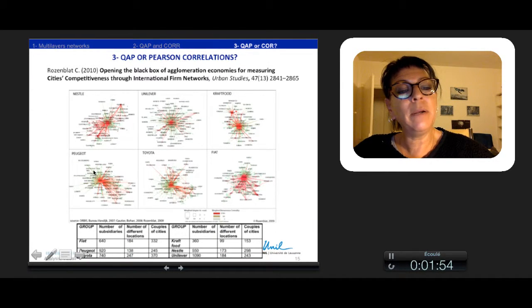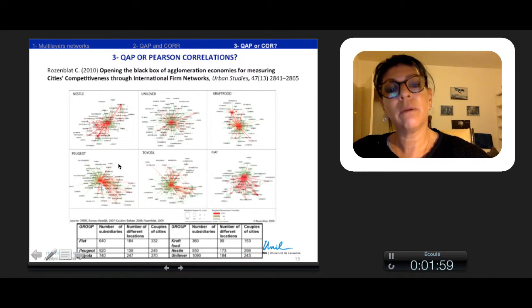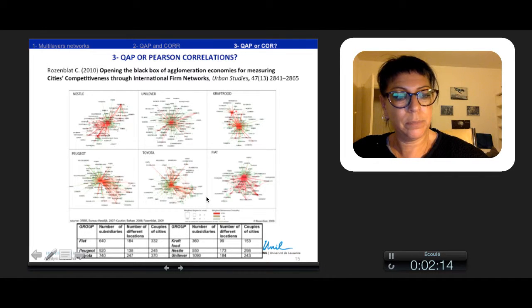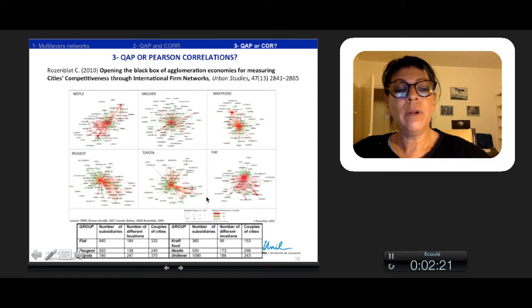All these relations compose the agglomeration economies that we can summarize by the sharing-matching-learning of Duranton and Puga. We proposed to use empirical evidence in order to evaluate how different networks of firms are usually close to each other. We looked to the regular co-location of the network. More it is high, more there is a high likelihood that these enterprises have direct or indirect linkages inside cities.